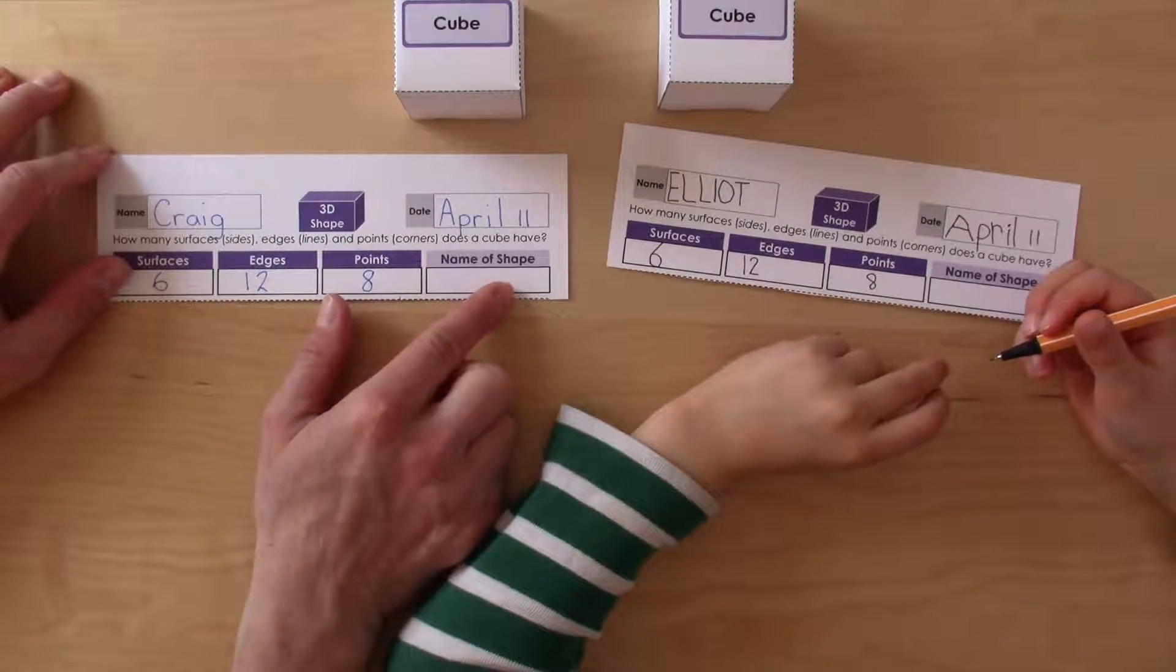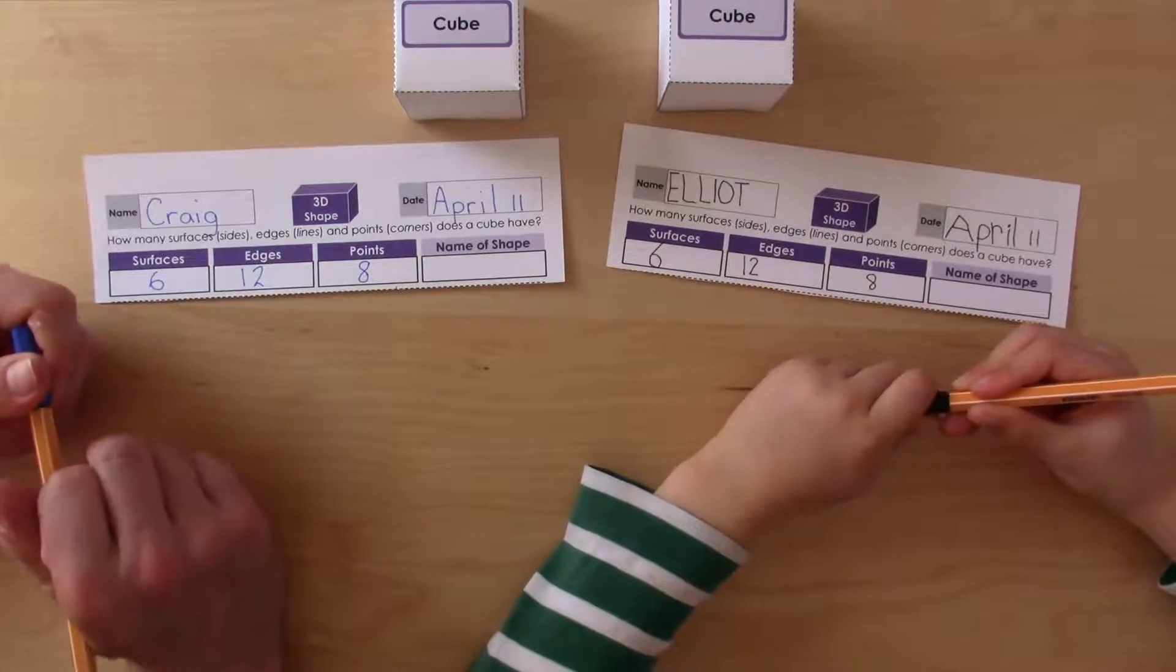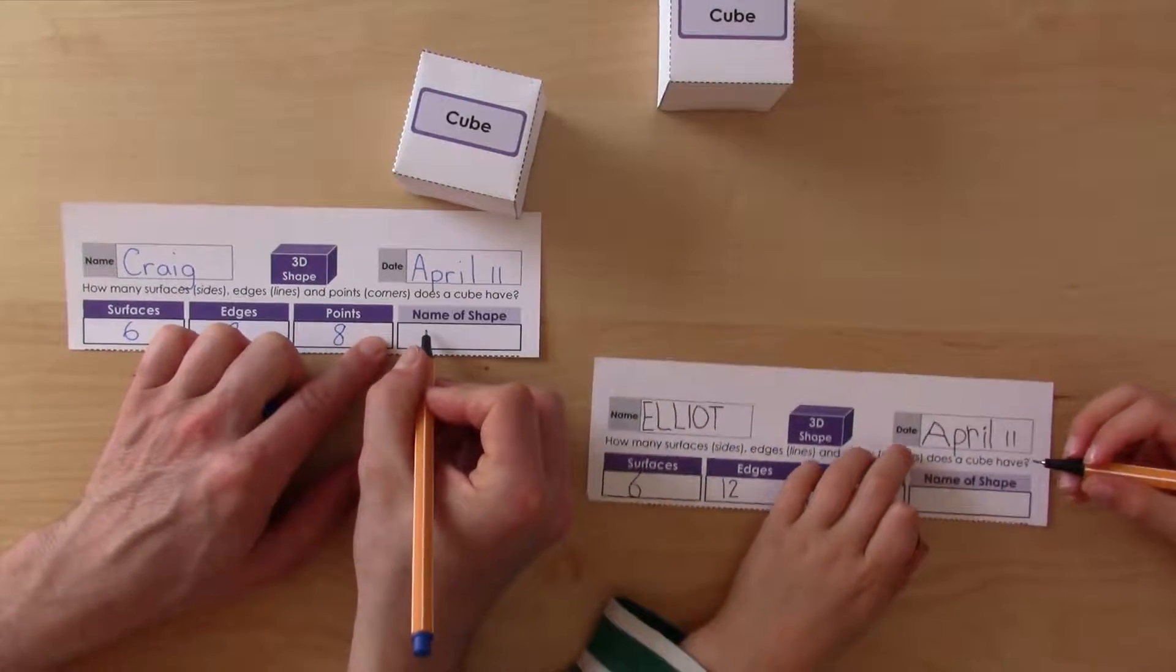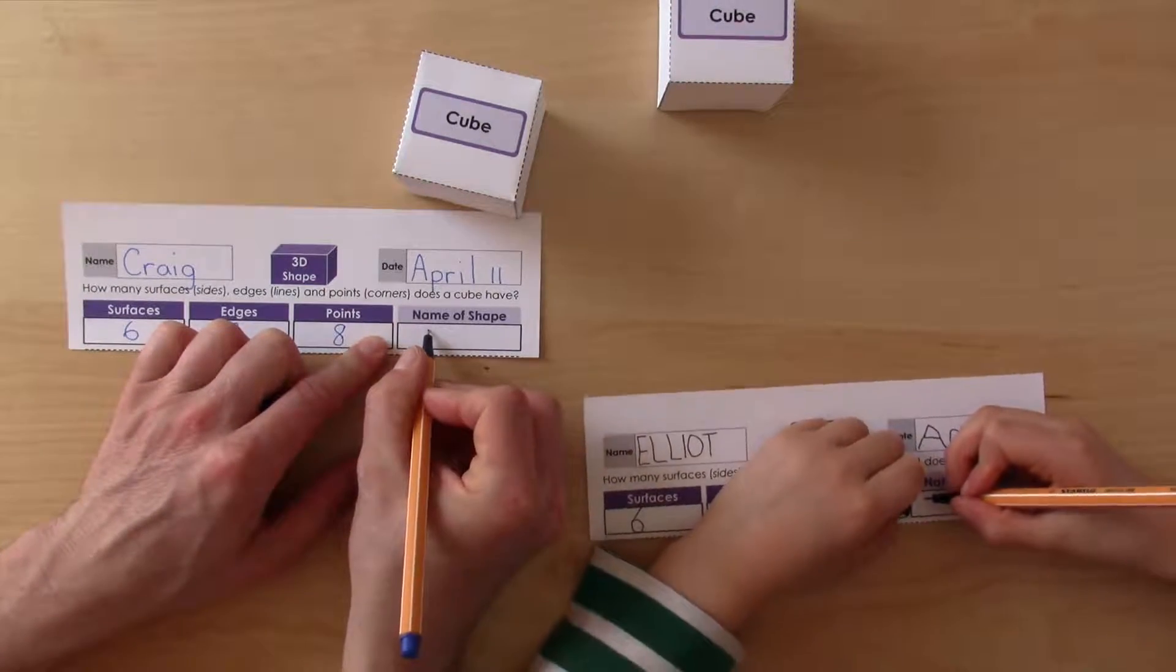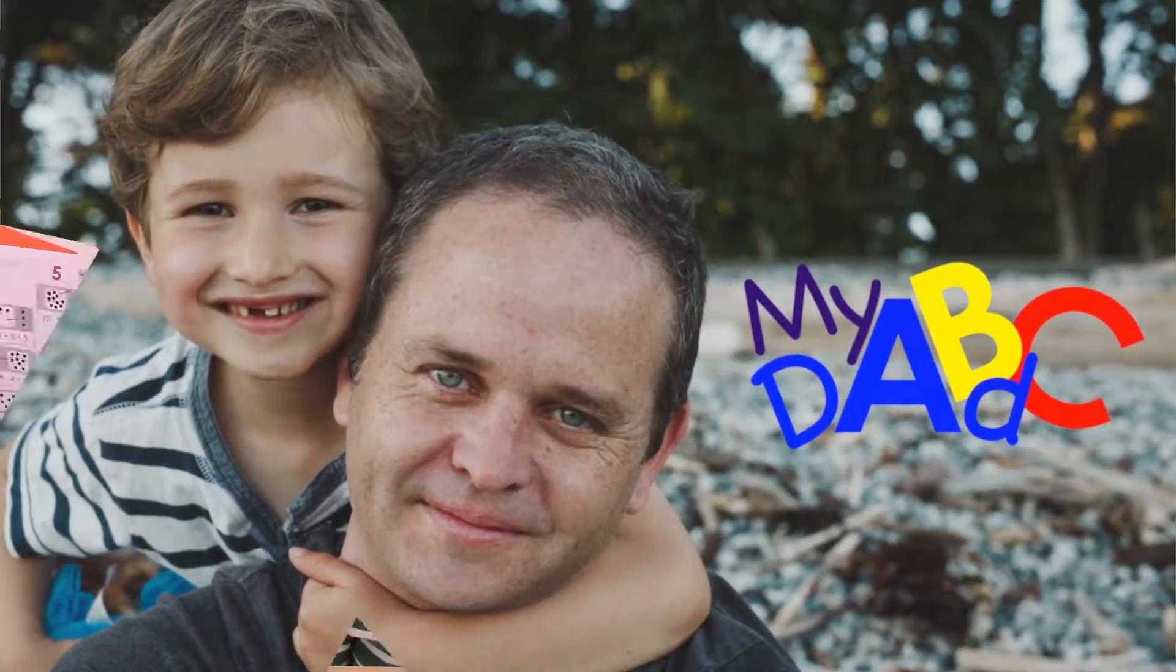And now we need the name of the shape. What is the shape called? Cube. Cube. It is a cube. So we can actually copy the name and put it on our work here.